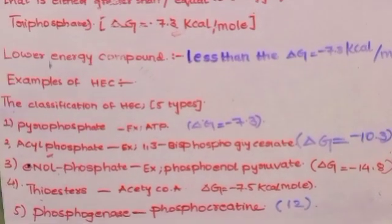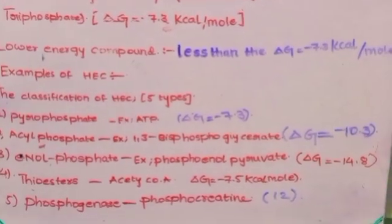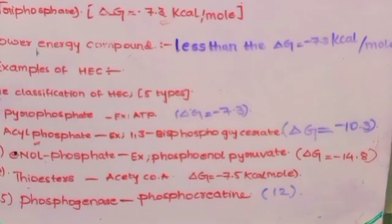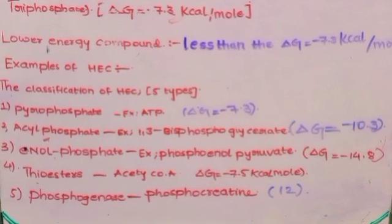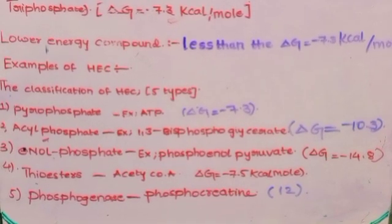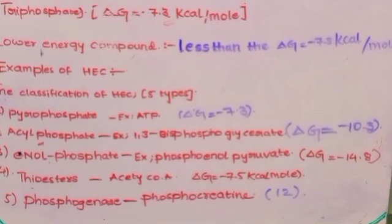Compounds that produce less energy than this are called lower energy compounds. Now, the classification of higher energy compounds - there are five types.